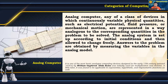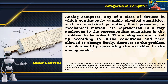An analog computer is any of a class of devices in which continuously variable physical quantities — such as electrical potential, fluid pressure, or mechanical motion — are represented analogously to the corresponding quantities in the problem to be solved. The analog system is set up according to initial conditions and then allowed to change freely. The slide rule is one of the most basic analog computing devices, designed in the early 17th century around the 1630s by William Oughtred. It was initially used for multiplication and division, and later found applicable for exponential, logarithmic, and trigonometric functions.